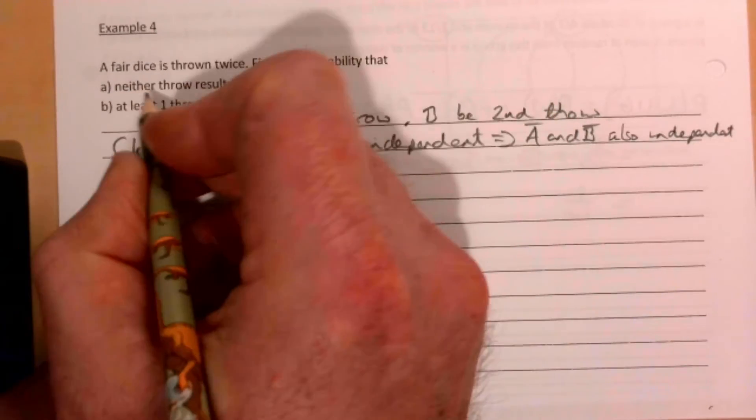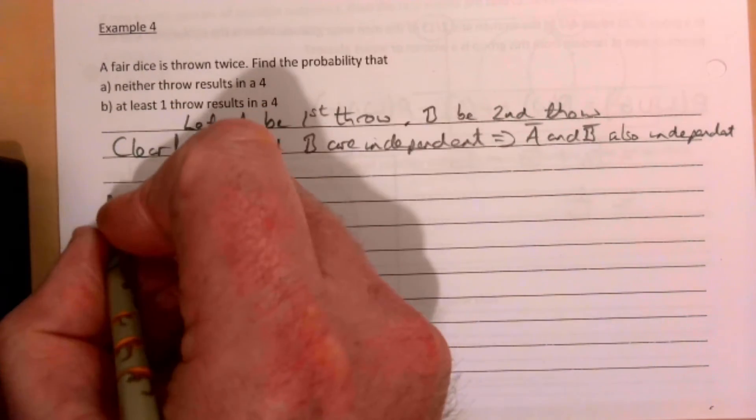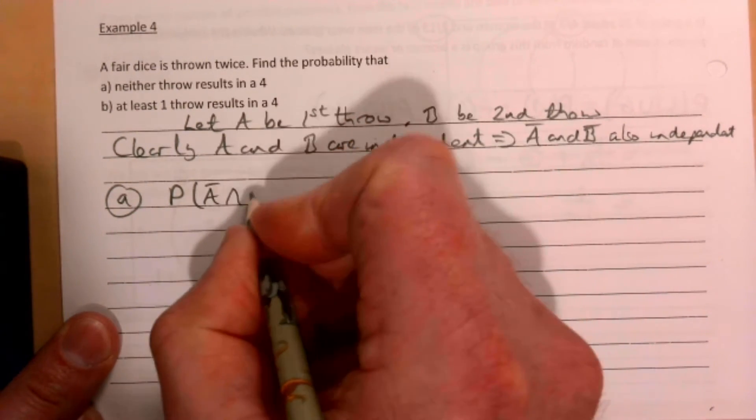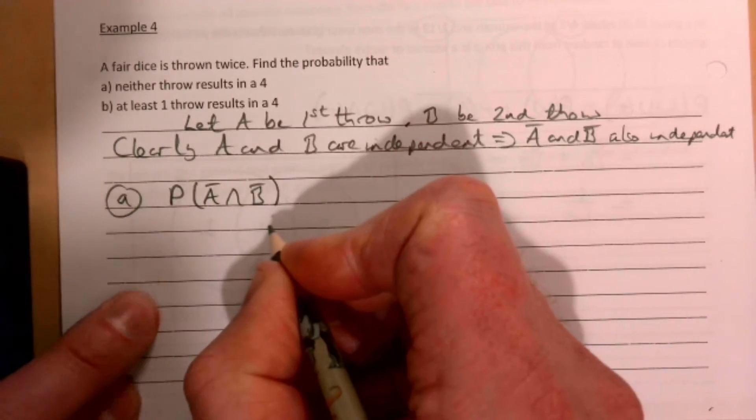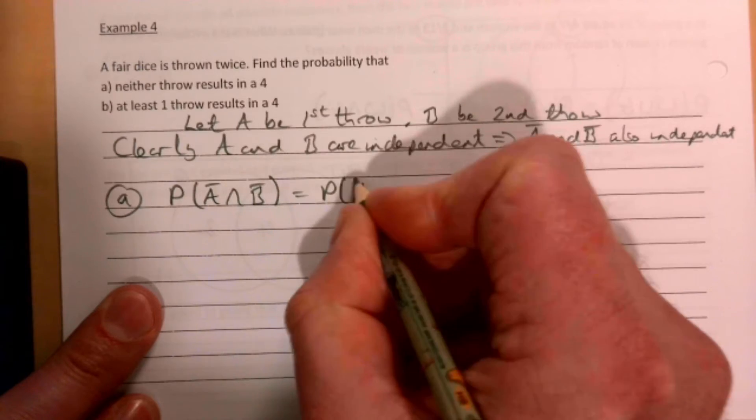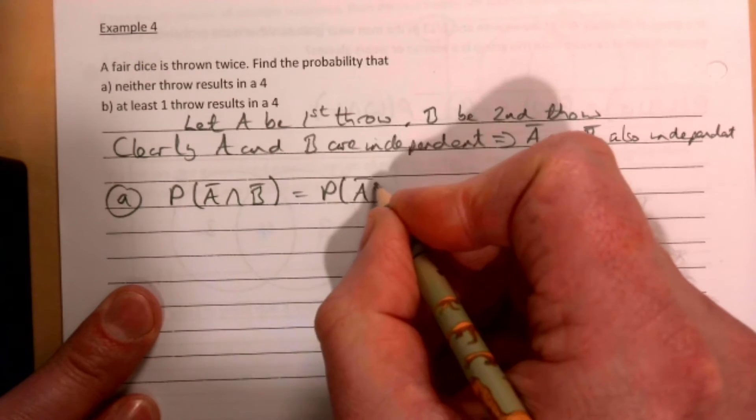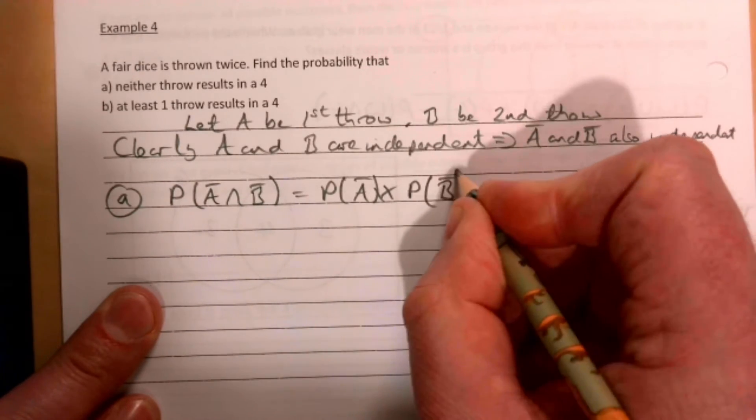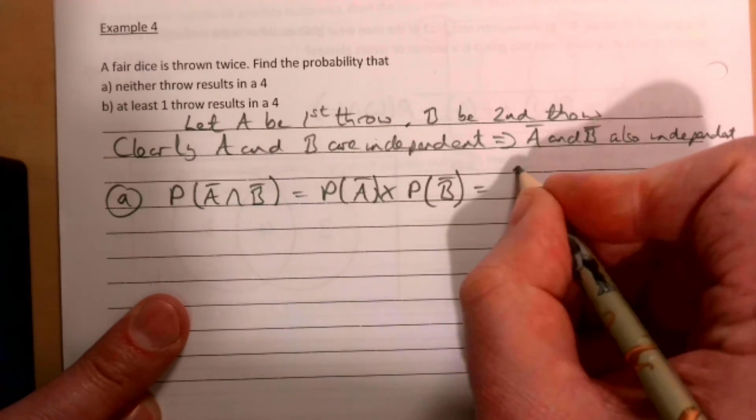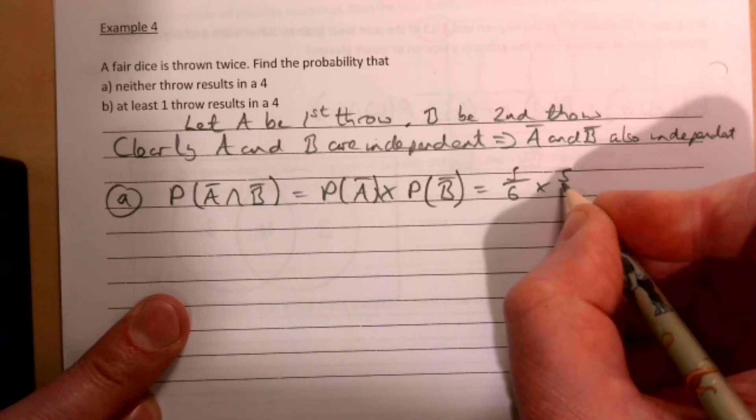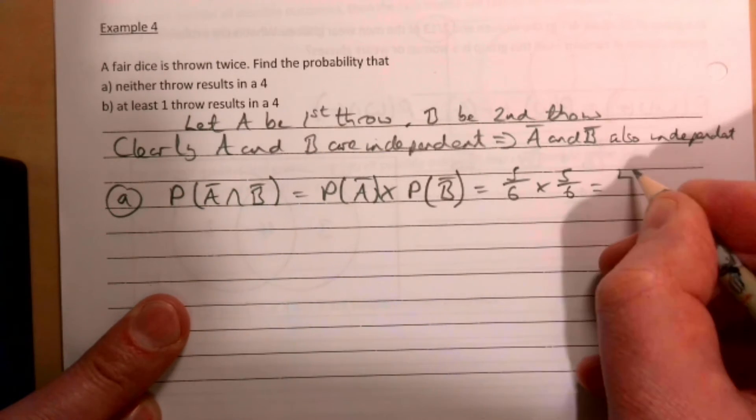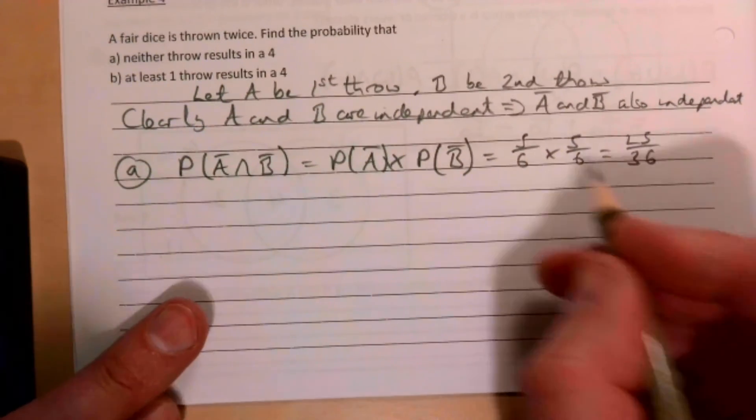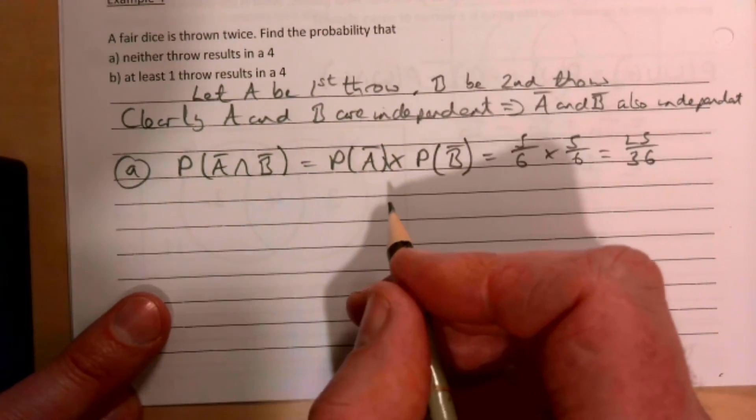So for part A, neither throw results in a four. Probability of not A and not B is equal to the probability of not A multiplied by the probability of not B, which is equal to five-sixths multiplied by five-sixths, and that gives us 25 over 36. Neither has a four, so not a four here is five-sixths, not a four here is five-sixths, so we end up with that.